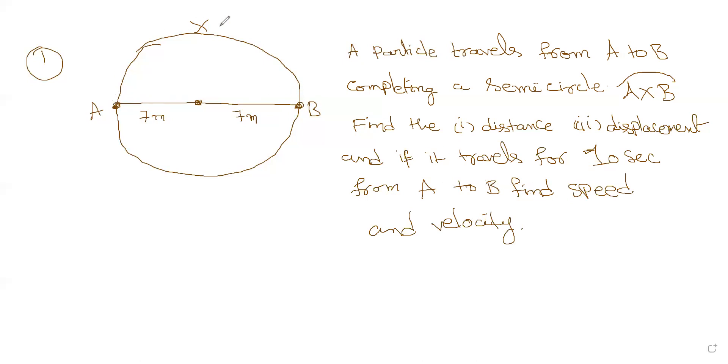Now from A to B it forms a semicircle. So A x B refers to the curved path, that is distance. Distance is half of the perimeter, that is half of the circumference, that is pi r. Circumference is 2 pi r, half of that is pi r. So pi is 22 by 7 here, r is 7, so that is 22 meters.